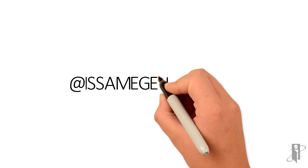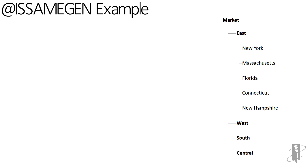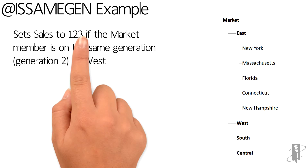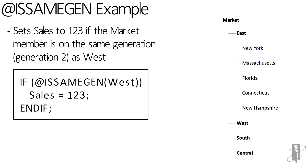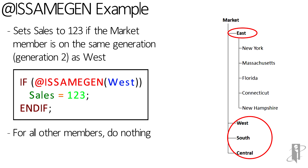Let's take a simple example. Say we're trying to determine if we are at the region level — if we are, we want sales equal to 123. So we say isSameGen(West), which will return true if the current member is West or something of the same generation, such as East, South, or Central — the region level. So if we're on a region, set sales equal to 123; otherwise, don't do anything.